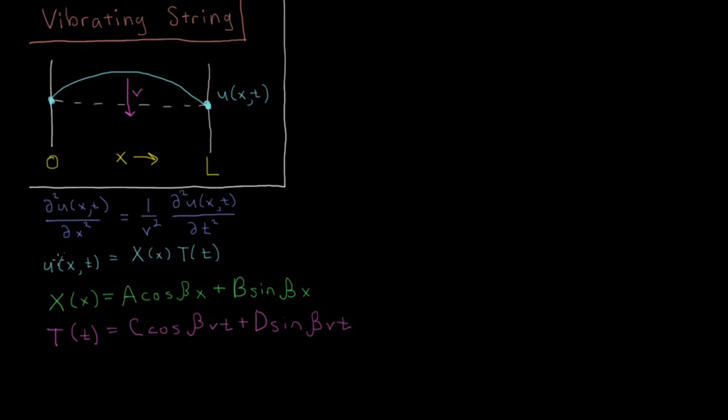We use separation of variables to hypothesize that we can separate this into a function of x and a function of t which together give us the total function. Then we went through some general principles to derive the case that the function of x is some cosine of x and sine of x, and that the function of t is some cosine of t and sine of t.